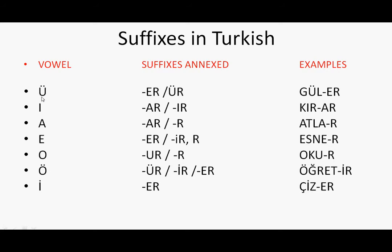This vowel is called Ü. So if a verb finishes with Ü, you have to use ER or Ür suffixes at the end of the verb. These forms are made with subject pronouns he, she, it. For example, Gül is the base form of the verb meaning 'smile.' Because it finishes with the Ü vowel, we add ER — so Gül + ER = Güler.